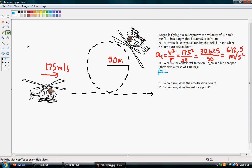Now, we know that the equation for force is mass times acceleration. So, we know that the force is equal to the mass, 1,400, times the acceleration, which is 612.5 meters per second squared.